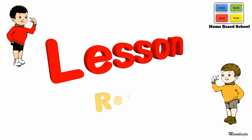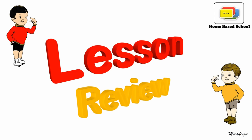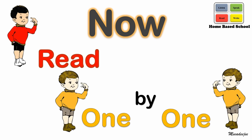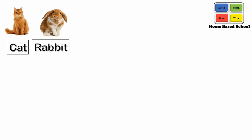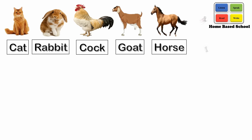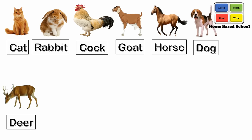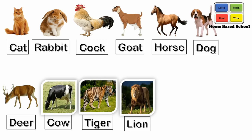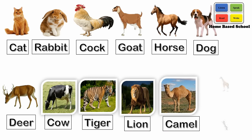Lesson Review. Now read one by one. Cat, rabbit, cock, goat, horse, dog, deer, cow, tiger, lion, camel and giraffe.